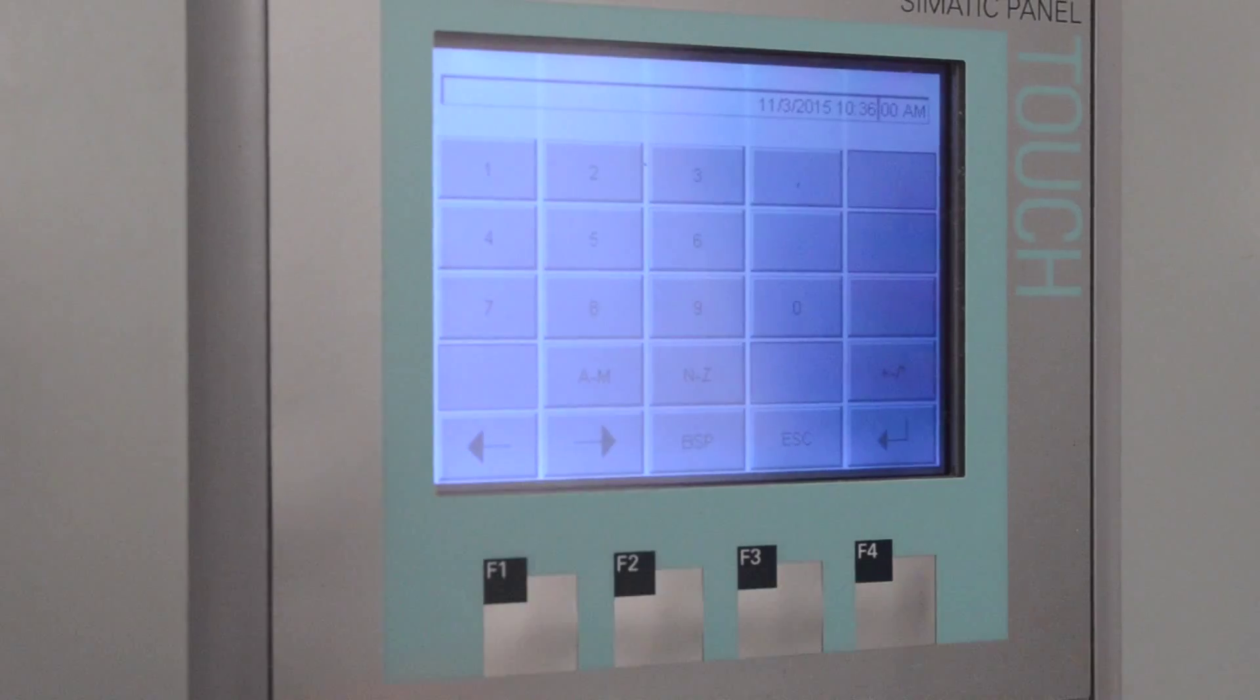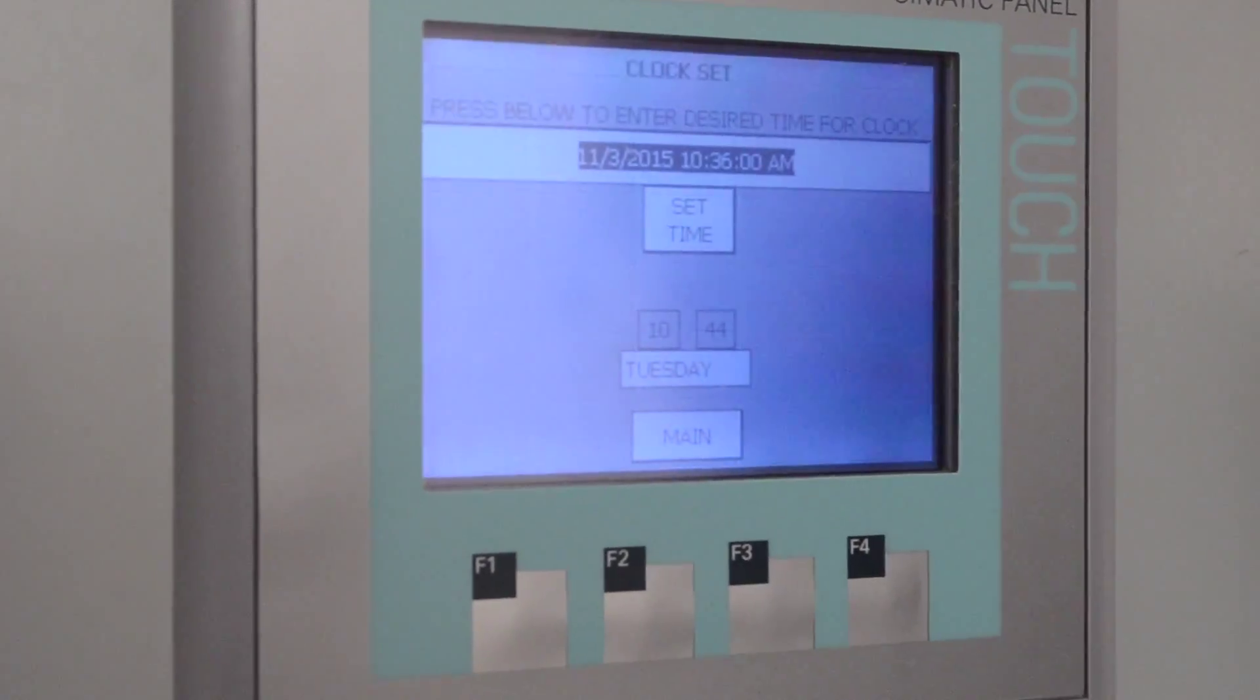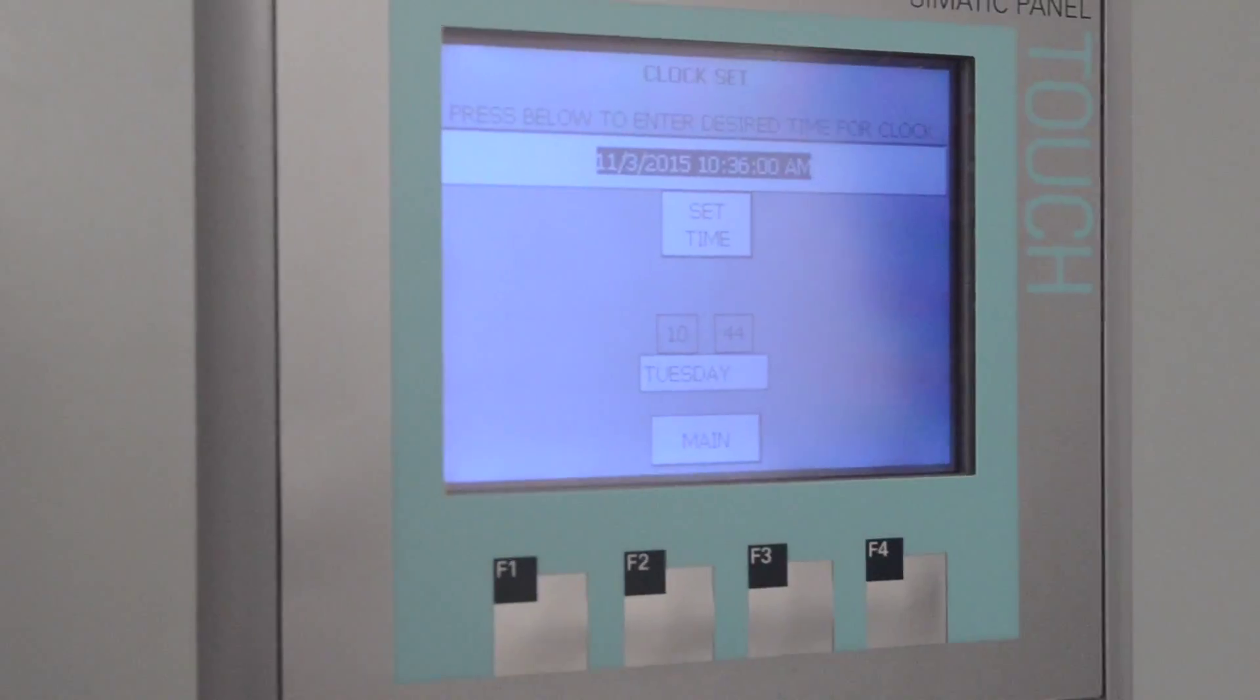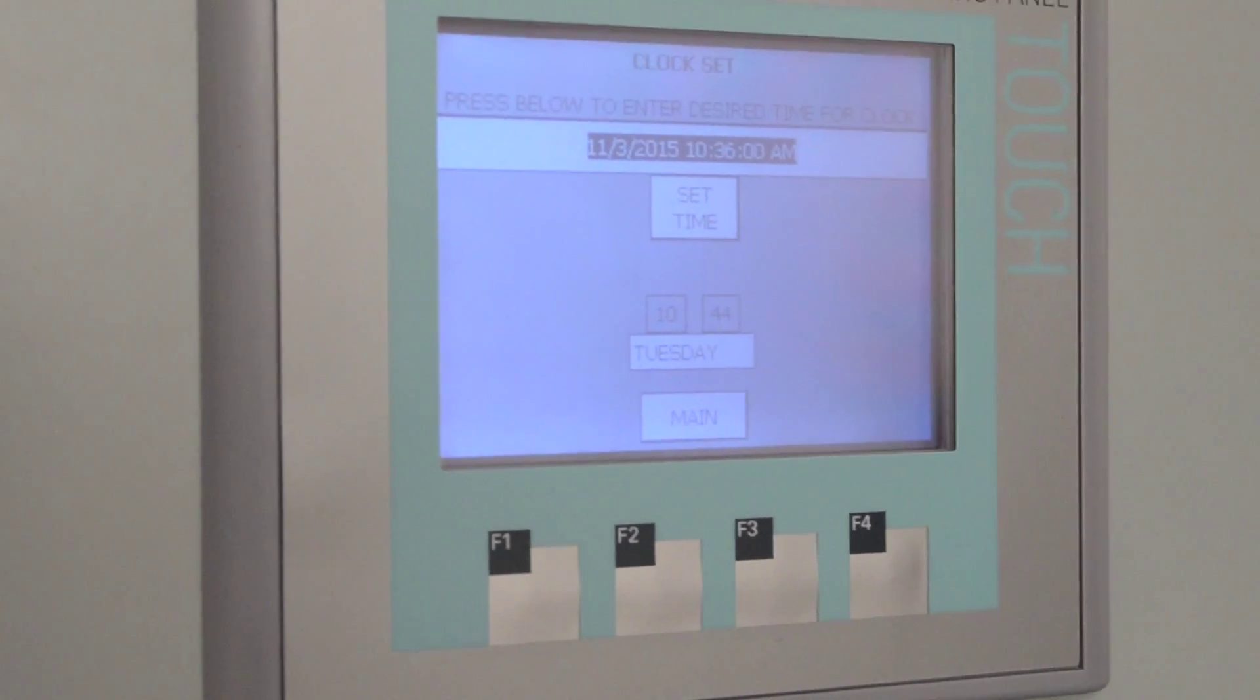Press my enter button, which is my down and left arrow carriage like it was in a typewriter. Then after I do that, you press set time to accept that and input that.